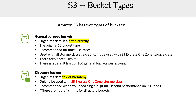There aren't prefix limits for directory buckets. I put an asterisk there because I'm not 100% sure why we need to point that out, but the language seems to indicate there could be some limitations I'm not aware of. Based on my observation using both bucket types, I haven't seen any limits, so I put an asterisk there just in case there's more to investigate.